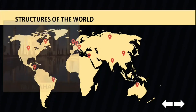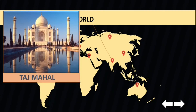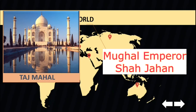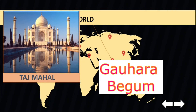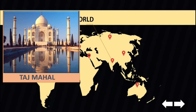Last on our list is the Taj Mahal. One man's greatest love for his wife created the crowning jewel of India, the Taj Mahal. It was built by Mughal Emperor Shah Jahan when his third wife, Mumtaz Mahal, died while giving birth to their 14th child, Gauhara Begum. It looks like a palace, but it was actually built as a tomb for the emperor's favorite wife.